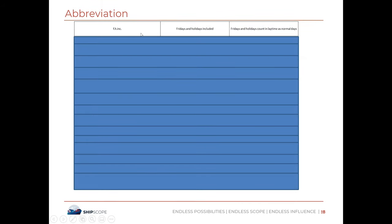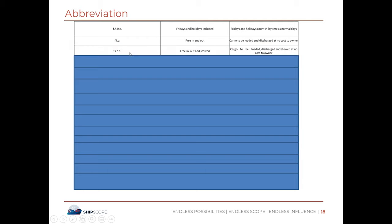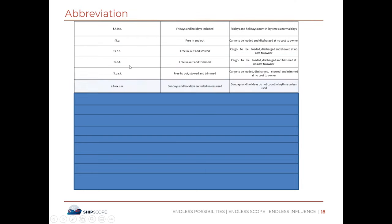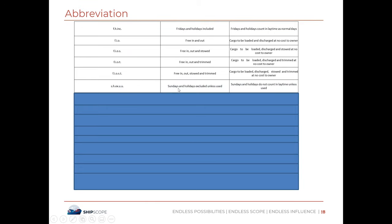FHI means 'Fridays and Holidays Included' — Fridays and holidays count in laytime as normal days. FIO, FIOS, FIOT, FIOST — these terms relate to cargo handling costs being borne by the charterer, meaning owners have no cargo handling cost obligations. SHEX UU means 'Sundays and Holidays Excluded Unless Used' — Sundays and holidays do not count in laytime unless used. SHEX EIU means Sundays and holidays do not count in laytime even if loading or discharging operations take place.